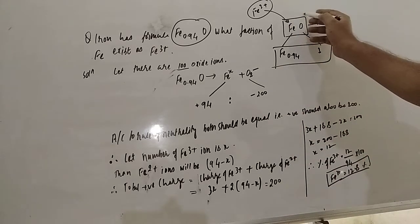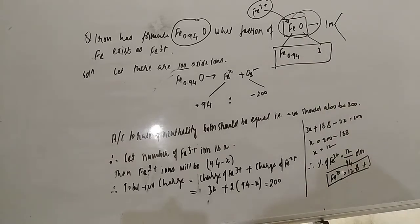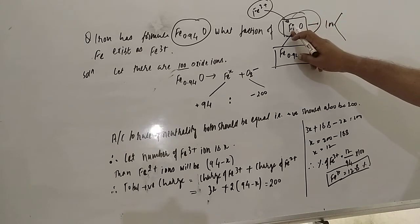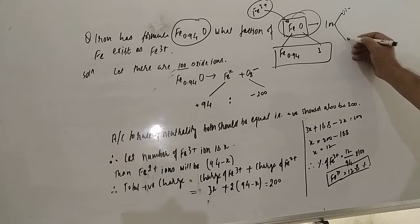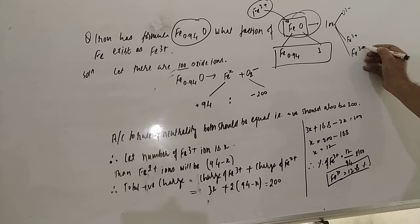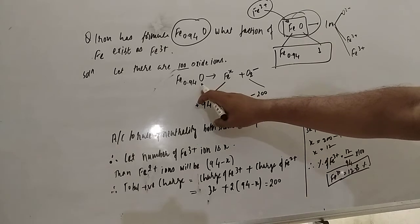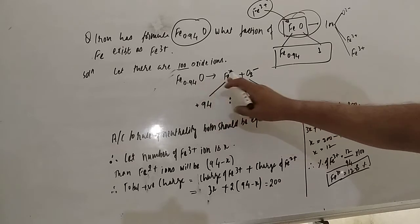Now, how do we solve this? We consider the total number of FeO as 100. So in 100 molecules, oxygen will be 100. The Fe will not be 100 because the ratio is 0.94, so there are O²⁻ ions and Fe in the form of Fe²⁺ and Fe³⁺ both.